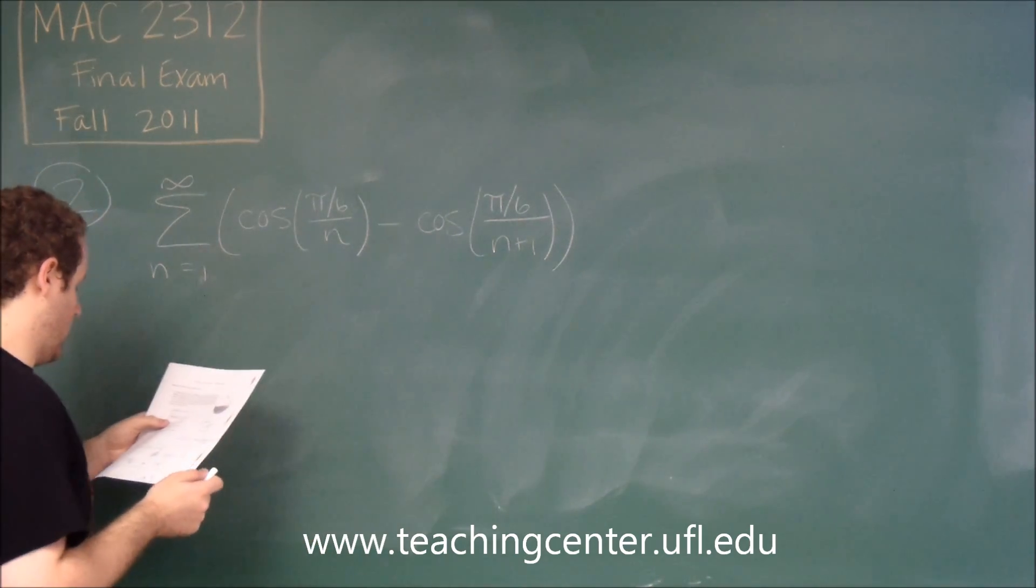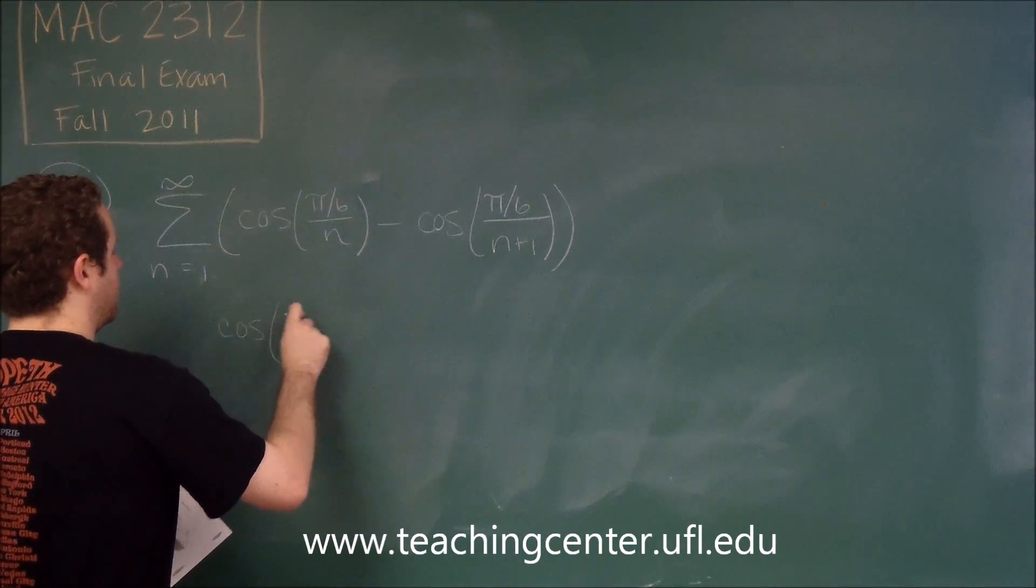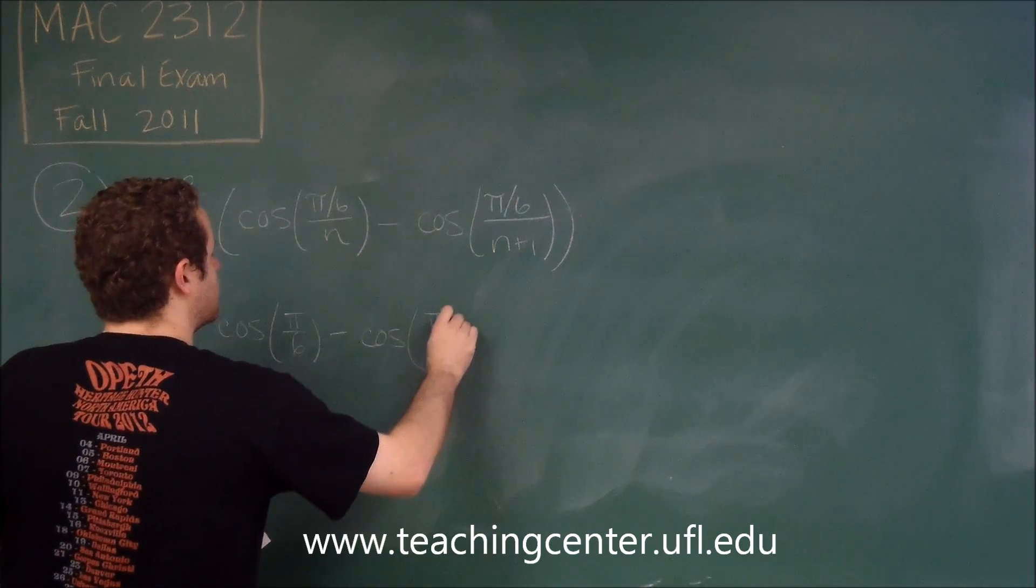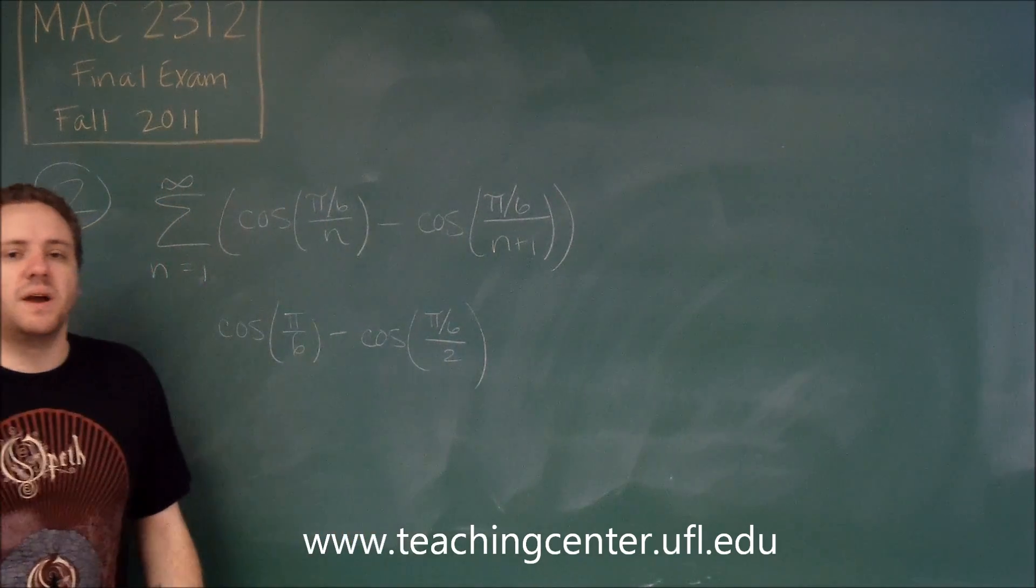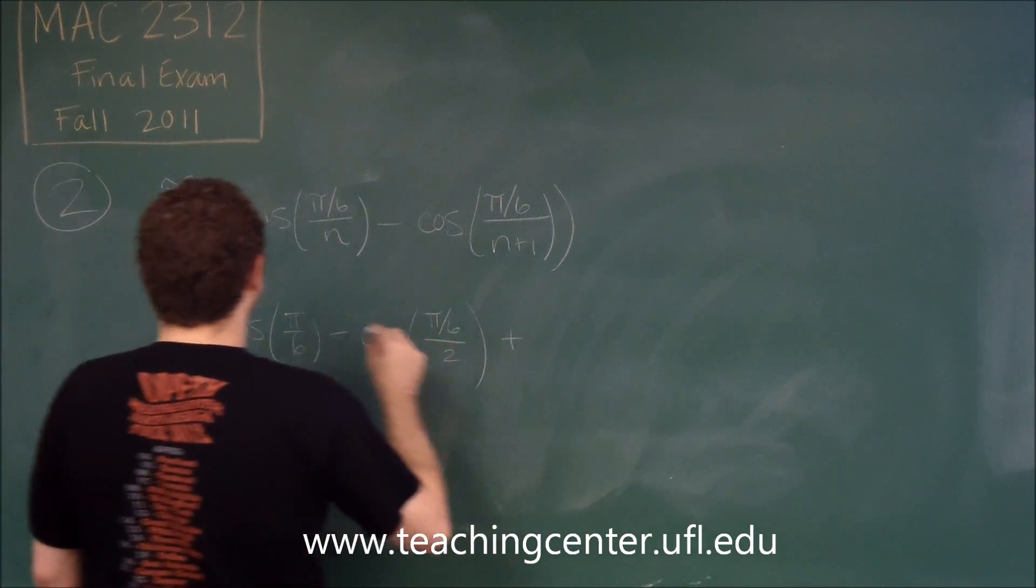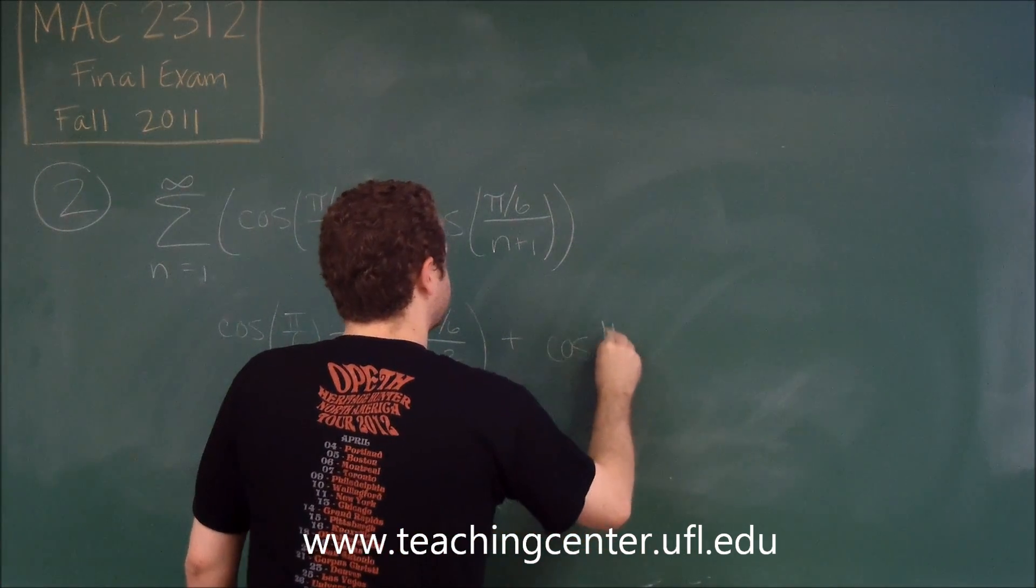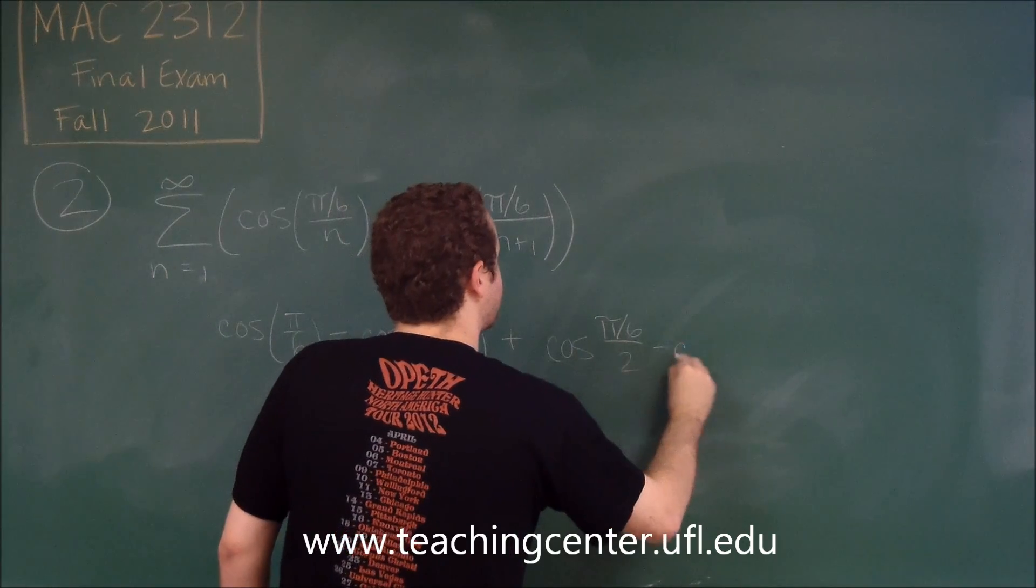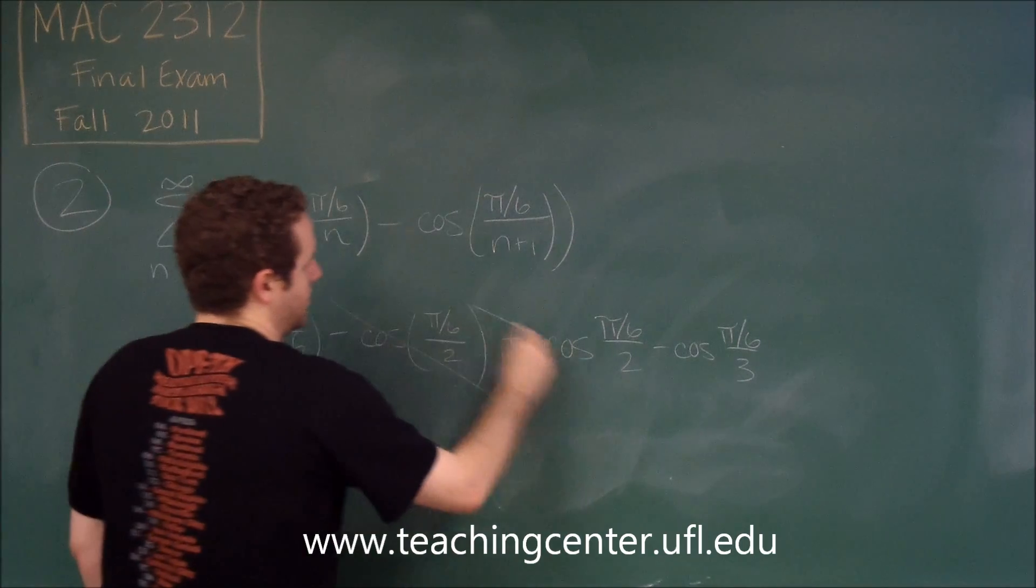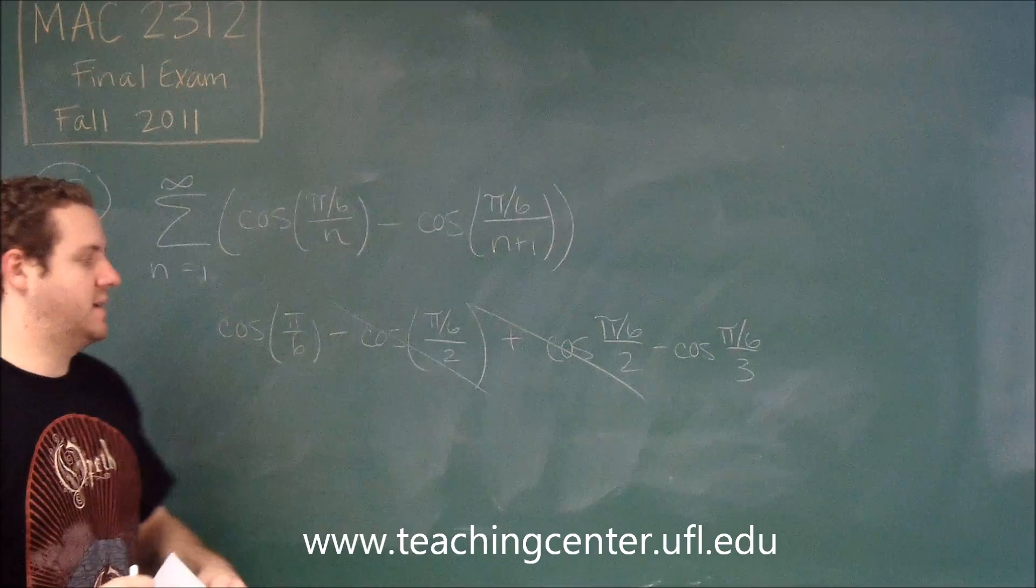So when we start, n equals 1, we just get cosine of pi over 6 minus cosine of pi over 6 over 2. I'm not going to bother simplifying this because they're all going to start canceling out pretty soon anyway. The next term, when n equals 2, you can see you're getting cosine pi over 6 over 2 minus cosine pi over 6 over 3, and these cancel out.